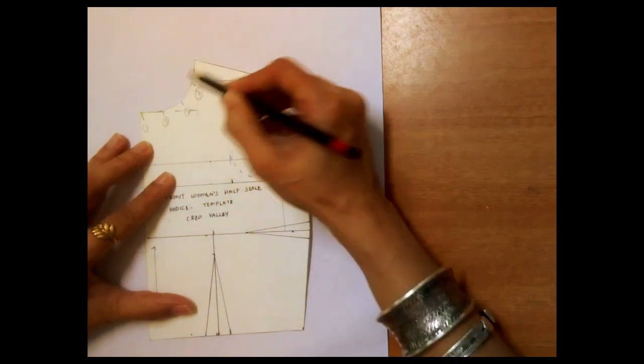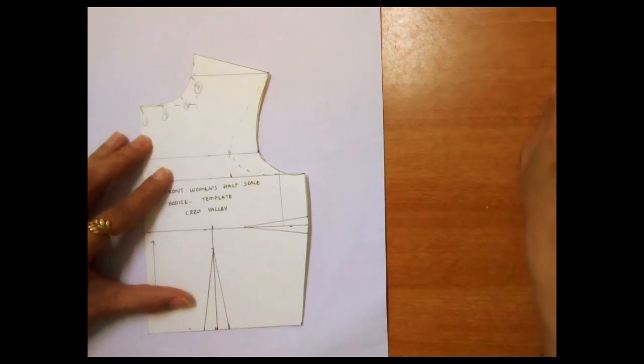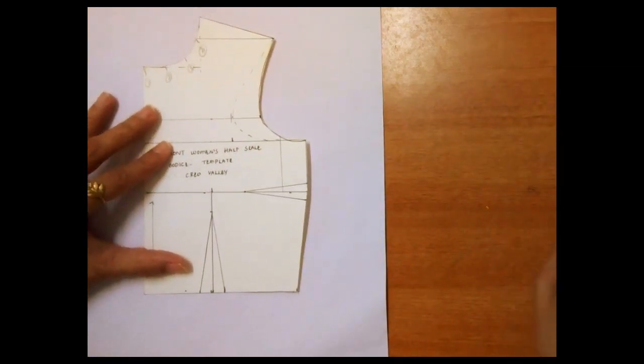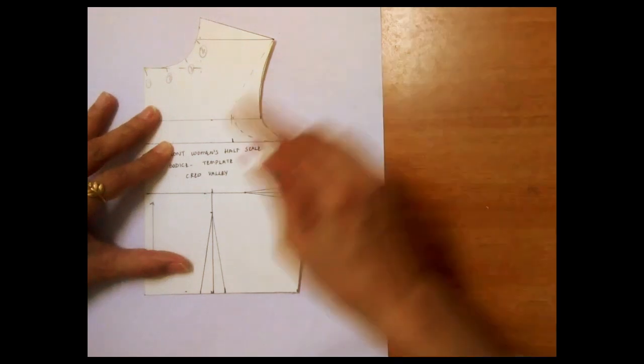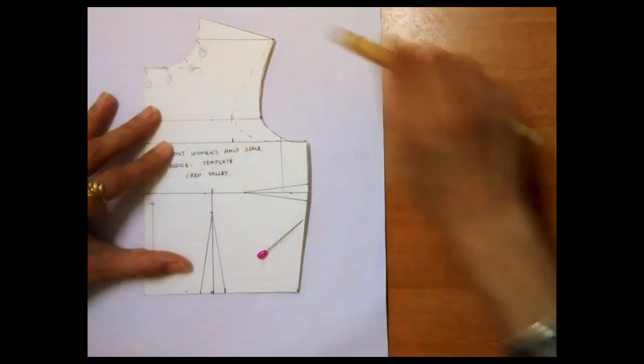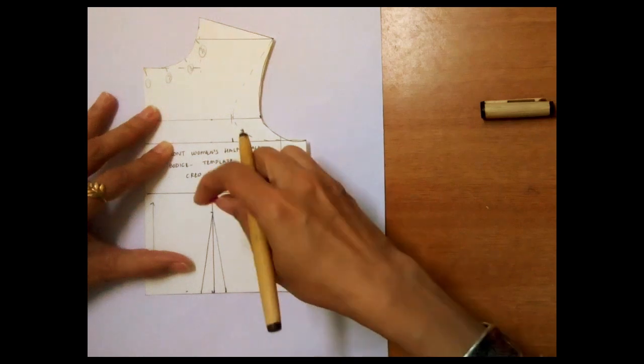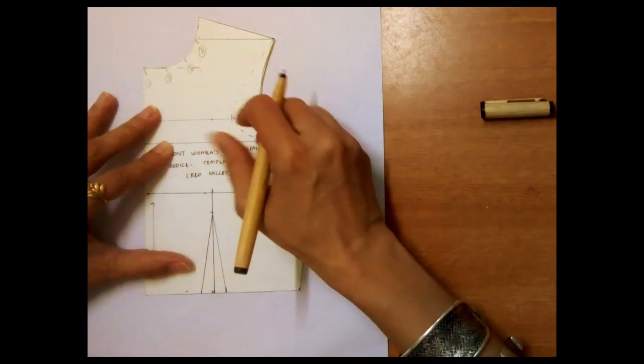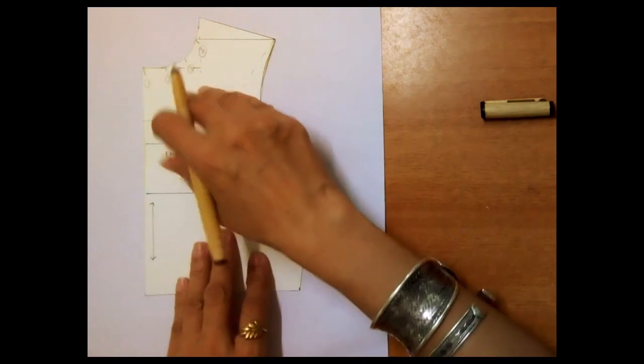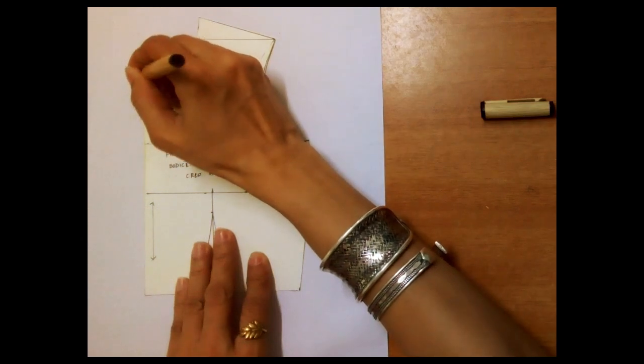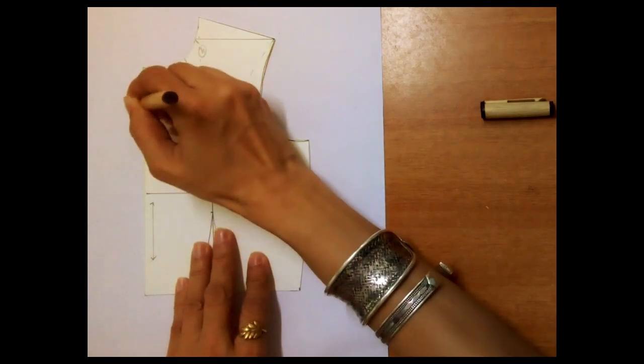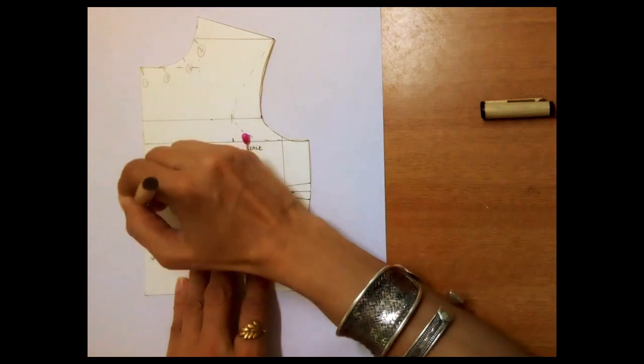I am going to place the front half scale pattern on a fresh sheet of paper. I will mark 3 to 4 points on the neckline which are going to be the new dart positions. I will use a pearl head pin at the apex point in order to rotate or pivot the pattern while applying the dart manipulations.